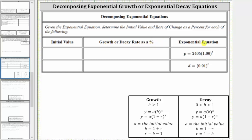When we have an exponential equation in the form y equals a times b raised to the power of x, if the base b is greater than one, we have exponential growth, and the base b is equal to one plus r, where r is the growth rate as a decimal. If we set the base b equal to one plus r and solve for r, we have r equals b minus one. And the value of a gives us the initial value or starting value.